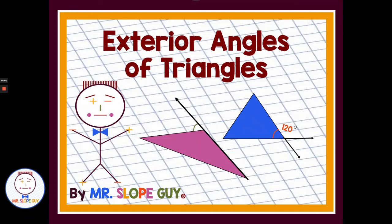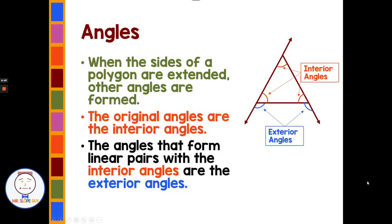Hello, it's Mr. Slope Guy here today to help you with exterior angles of triangles. So when the sides of a polygon are extended, other angles are formed. We have a triangle here, and we've extended these lines outside of the triangle. The original angles are the interior angles, shown here in orange — the ones inside the triangle. The angles that form linear pairs with interior angles are the exterior angles.